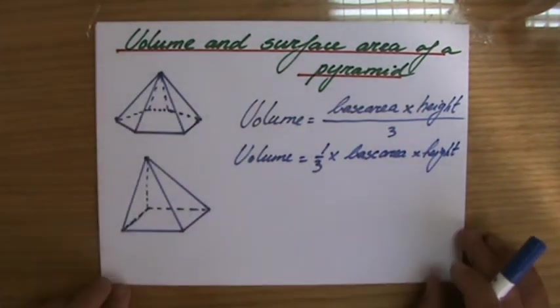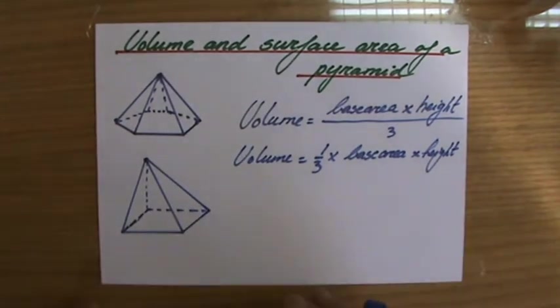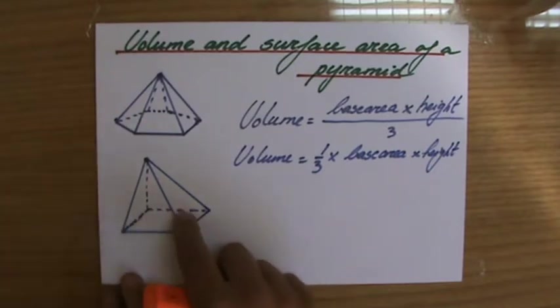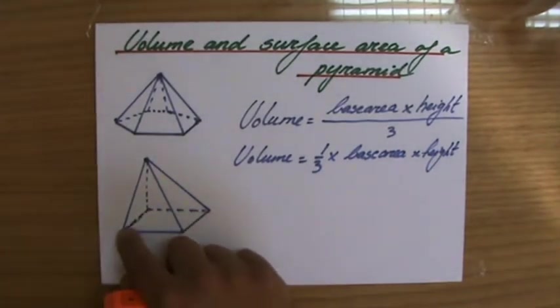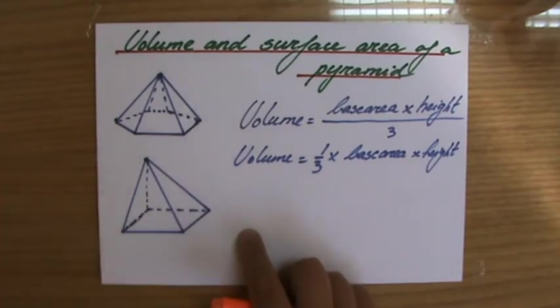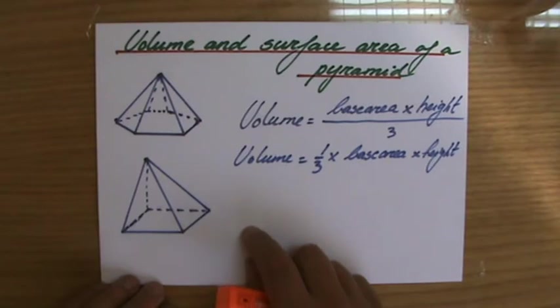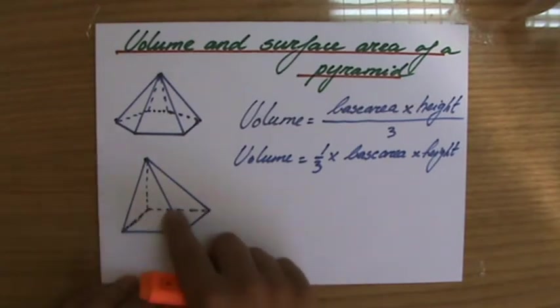Now I just quickly sketched two pyramids. A pyramid always gets its name looking at the base. So for instance this pyramid, what kind of a figure, what kind of a polygon is its base? Well it's a square, so we would call that a square based pyramid. But if that would be a rectangle, the base, it would be a rectangular based pyramid.